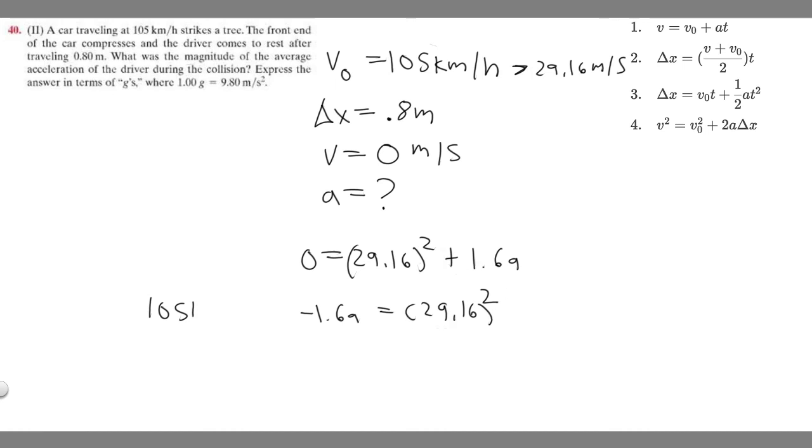We've got it like this. I'm going to square this, so 29.16 squared is going to be 850.3056. Then we got to divide by minus 1.6 to get the a by itself. If you divide that by minus 1.6 you should get minus 531.441. So this is going to be your acceleration in meters per second squared. It's negative because we're slowing down, because we're hitting this tree, the tree is going to cause us to slow down.